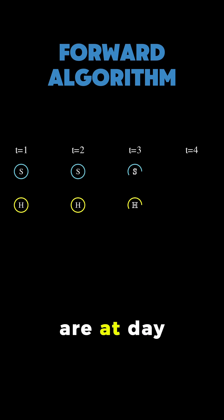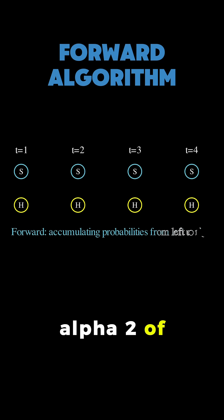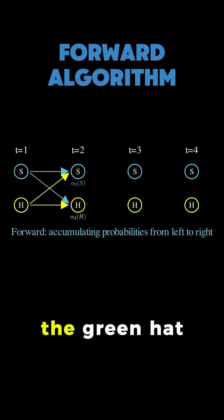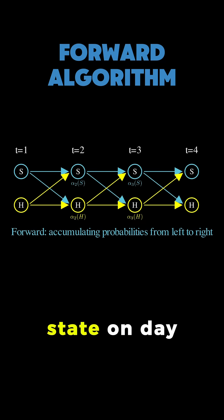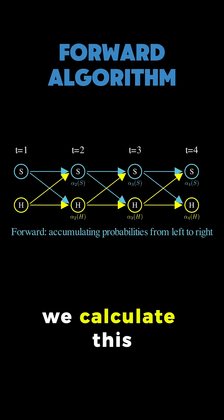So if we are at day 2 and considering the sad state, alpha 2 of sad tells us the probability of seeing the red hat on day 1, the green hat on day 2, and ending up in the sad state on day 2.